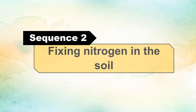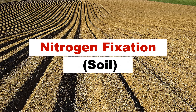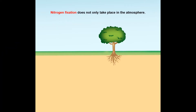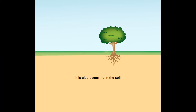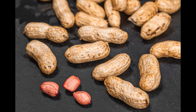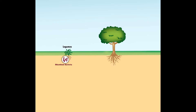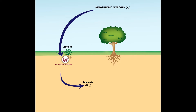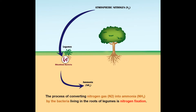Sequence 2: Fixing nitrogen in the soil. Nitrogen fixation does not only take place in the atmosphere; it is also occurring in the soil through bacteria living in the roots of legumes such as peas, beans, and peanuts. The rhizobium bacteria in the roots of legumes fix or convert the nitrogen gas from the atmosphere into ammonia. This process of converting nitrogen gas into ammonia by the bacteria living in the roots of legumes is nitrogen fixation in the soil.